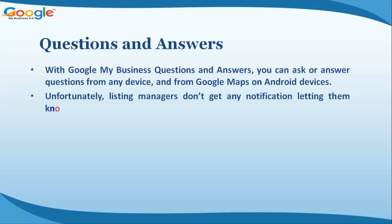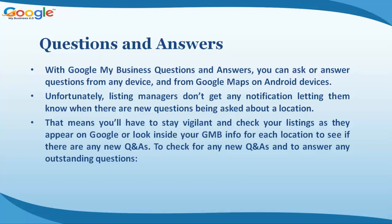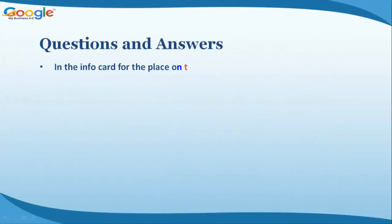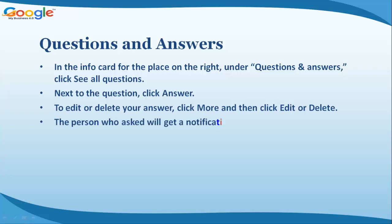Unfortunately, listing managers don't get any notification letting them know when there are new questions being asked about a location. That means you'll have to stay vigilant and check your listings as they appear on Google, or look inside your GMB Info for each location. To check for any new Q&As and answer outstanding questions, go to the Info card for the place on the right under Questions and Answers, and click 'See All Questions.' Next to each question, click Answer. To edit or delete your answer, click More, then click Edit or Delete.